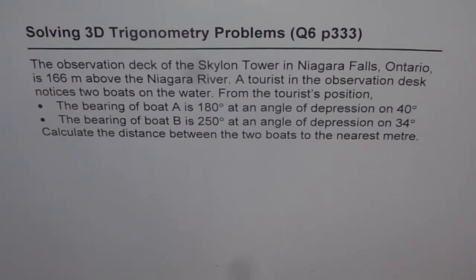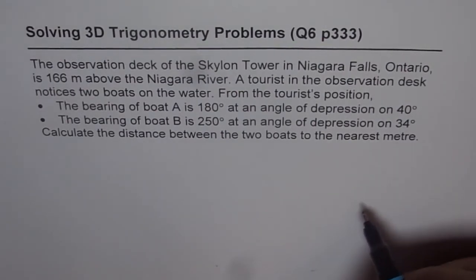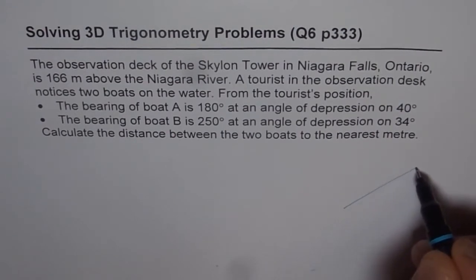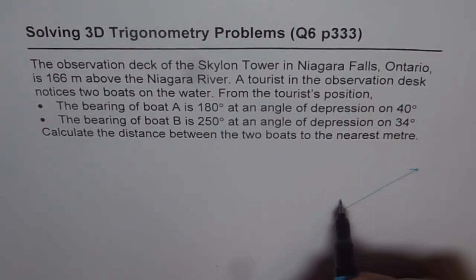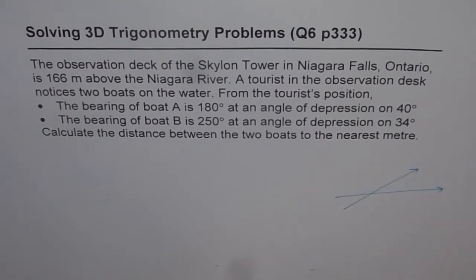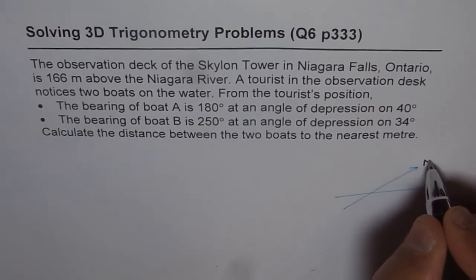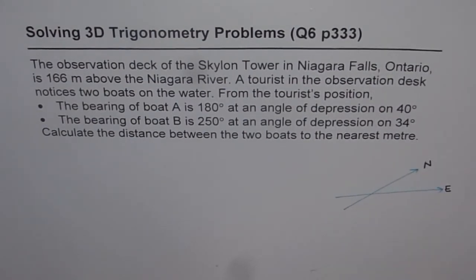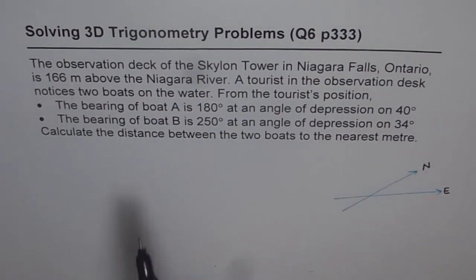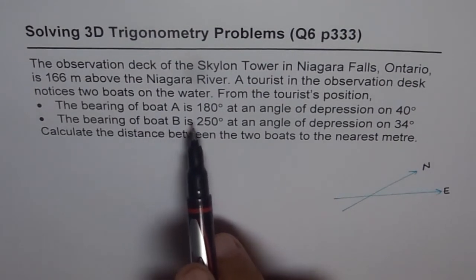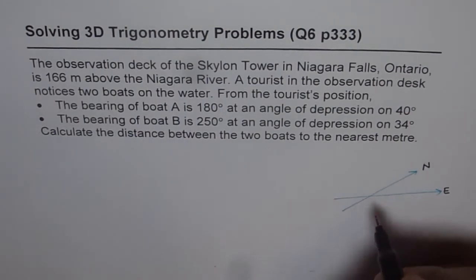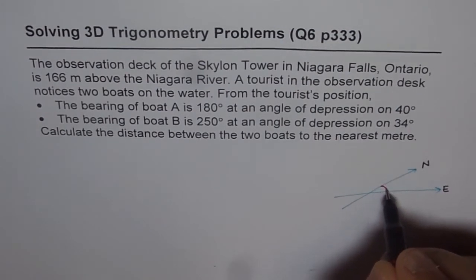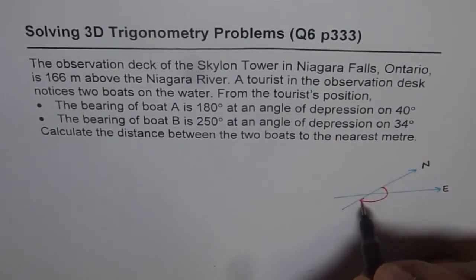Let's first try to sketch the diagram to represent the situation. We have two planes here — we represent north and east on the horizontal plane. Let this be the north direction and this is east. Whenever we are given bearing angles, they are always measured from north and they are clockwise. So when we say the bearing of boat A is 180 degrees, that means from this location, 180 degrees will be kind of like this — that is 180 degrees.